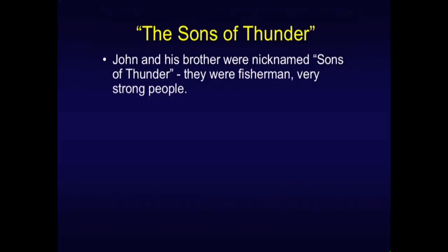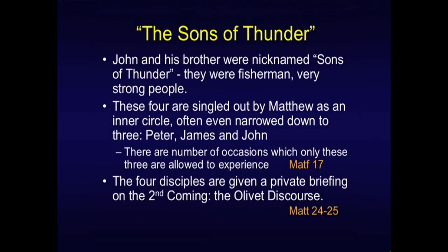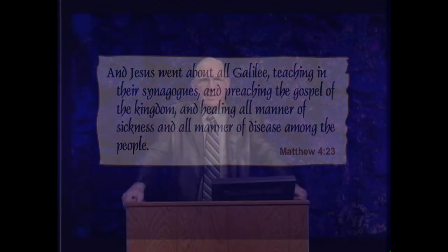James and John, the sons of thunder — they were fishermen, roughnecks, strong guys. I'm always amused that in Sunday school filmstrips John is always portrayed as so effeminate — that comes from Renaissance art, from Da Vinci's day. But that's contrary to Scripture; these guys were fishermen. These four — Peter, James, John, and Andrew — were singled out as an inner circle, normally narrowed down to three: Peter, James, and John. There were occasions where just the three of them experienced the transfiguration and so forth. The four were given a private briefing that we'll spend special time on in Matthew 24 — the most important second-coming passage among the Gospels.